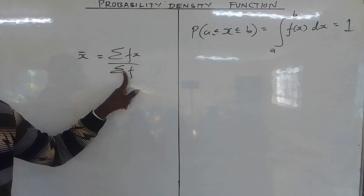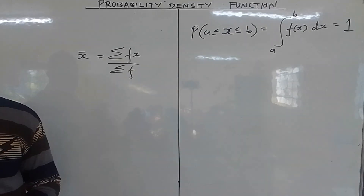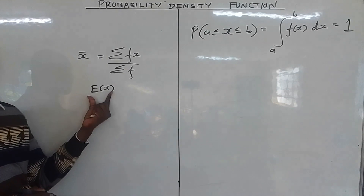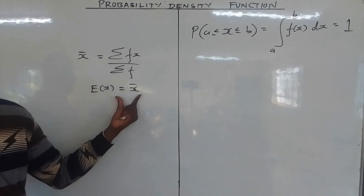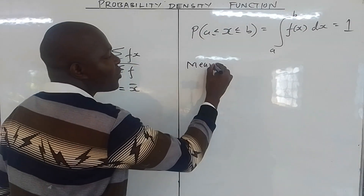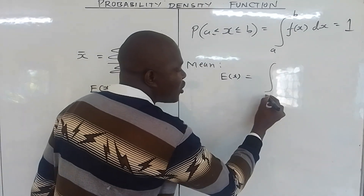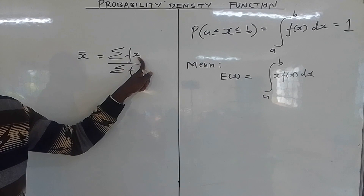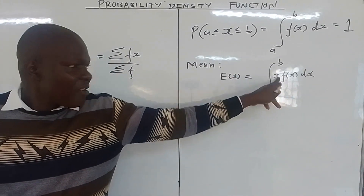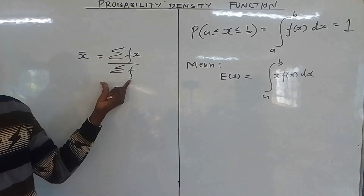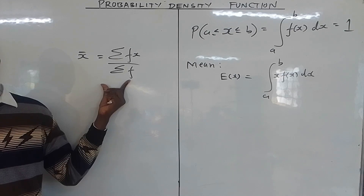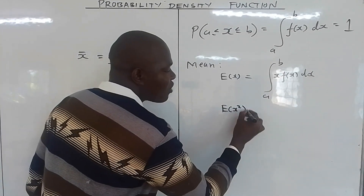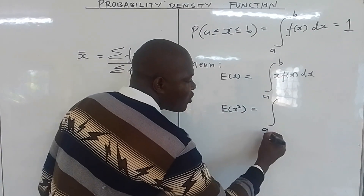The discrete random variable uses summation but the continuous random variable uses integrals. So if you want to get the mean, the expected value of x, you simply integrate x times f(x) dx. The frequency times x using summation is equivalent to the integral for continuous variables. So continuous uses integrals, discrete uses summation. When looking for the mean it is x times the probability density function — that is the expected value of x.